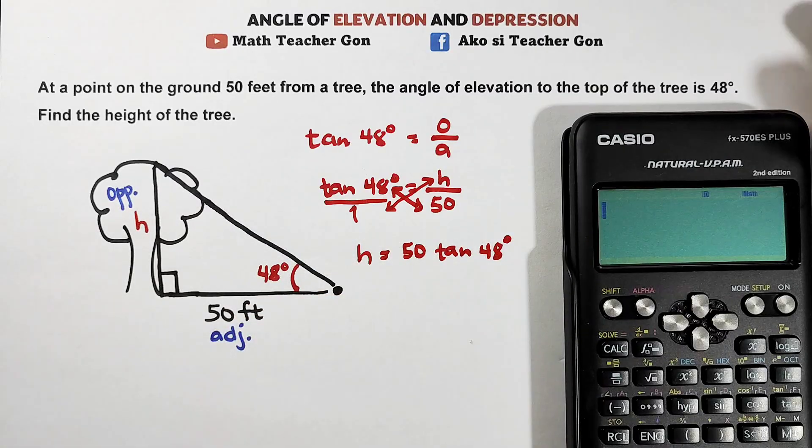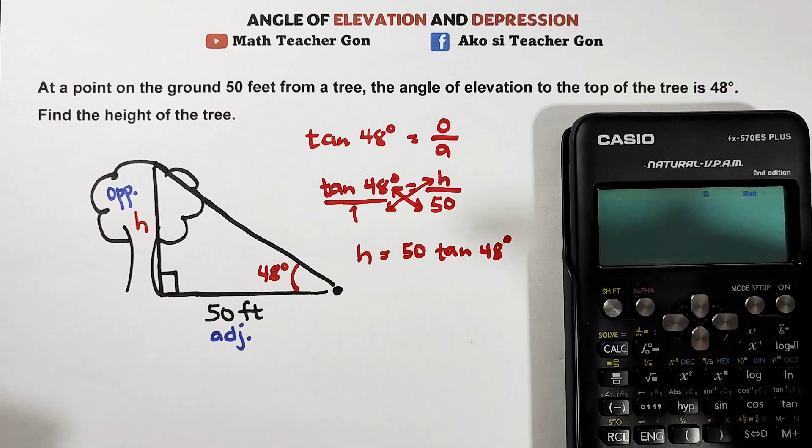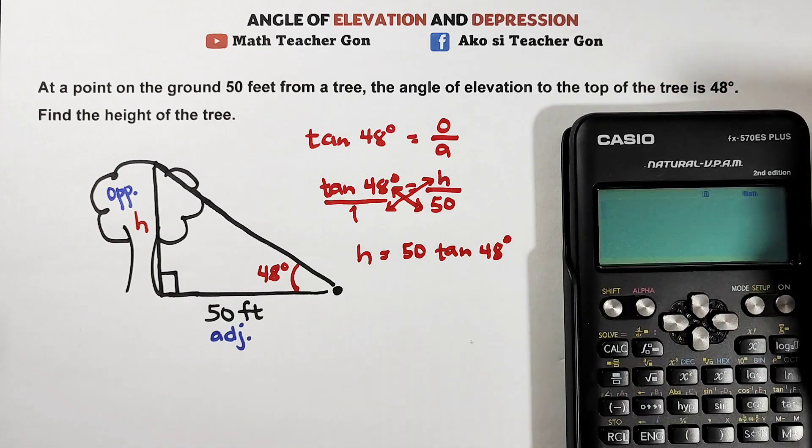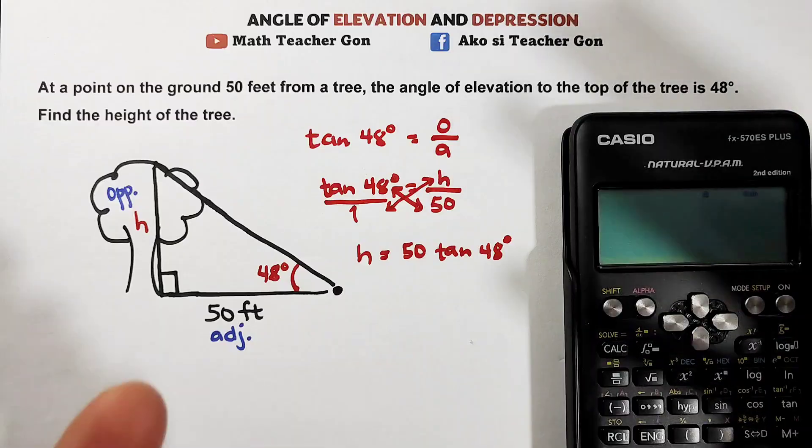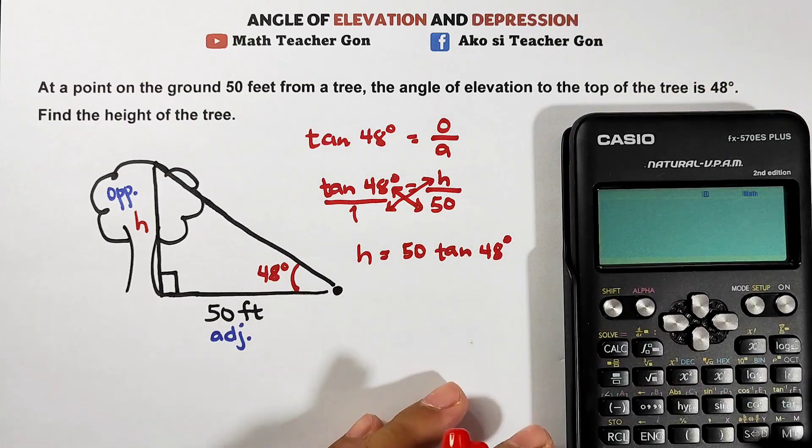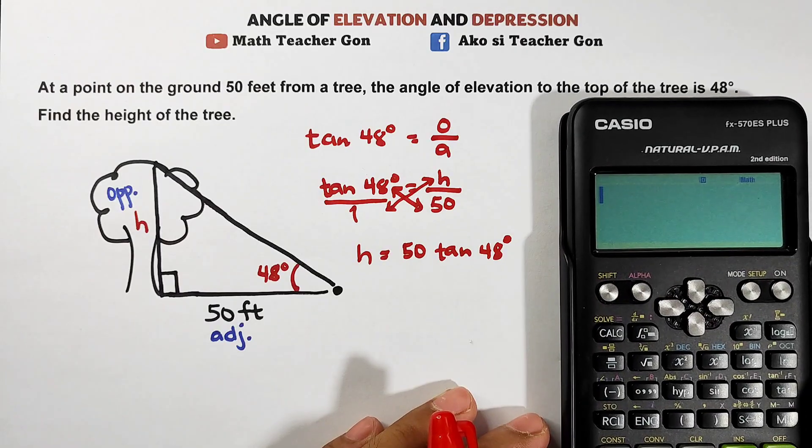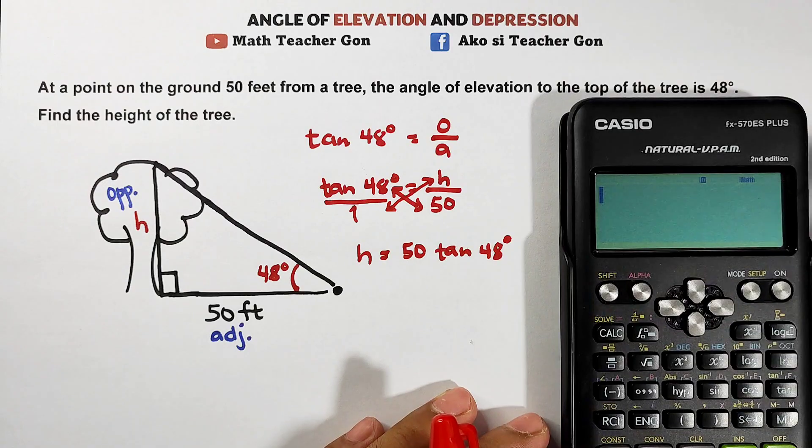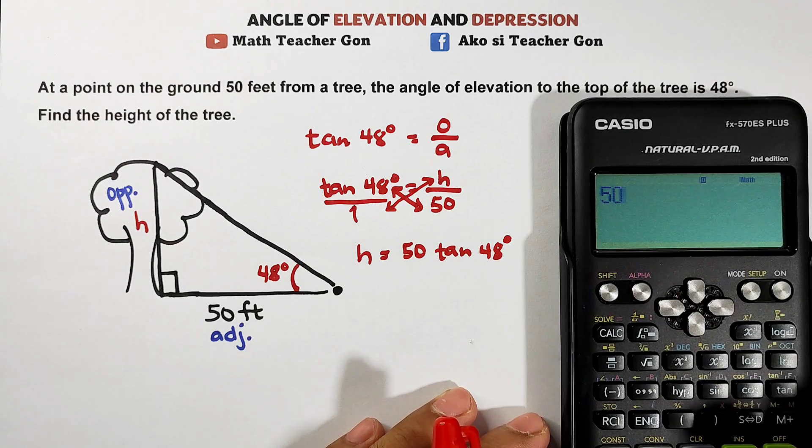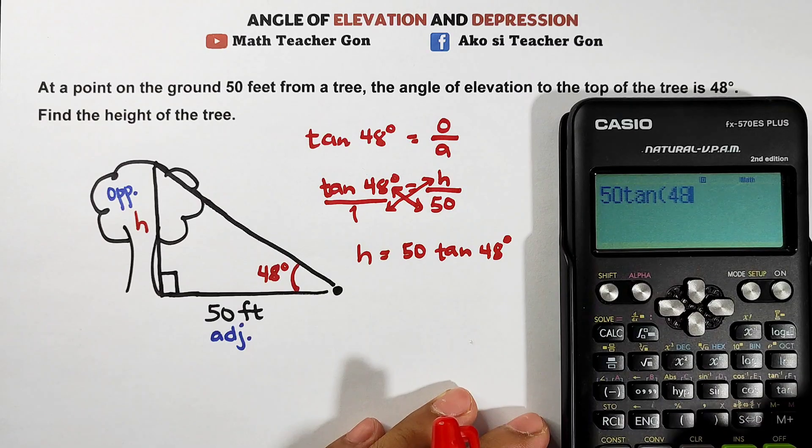Actually you can directly multiply it, but I'm just showing you the process of how to do it. So when your teacher requests the correct solution, the proper solution, you will be able to show it on your paper. So we have, just open your calculator. Right now I'm using the Casio FX570ES+. So 50 first, press 50, and then tangent 48. Even without the degree sign, 48 automatically.